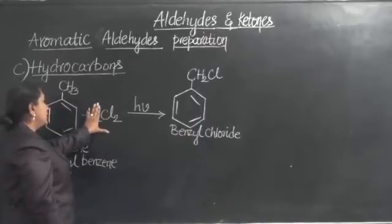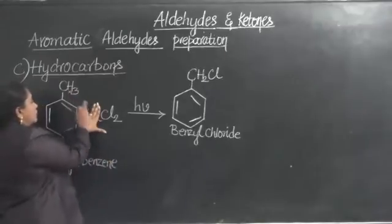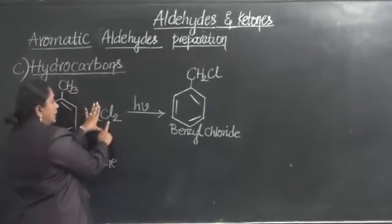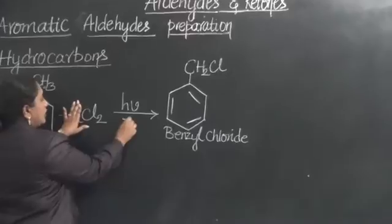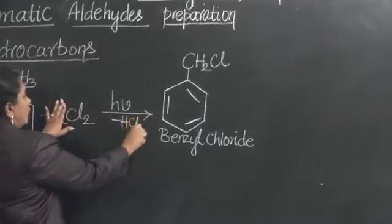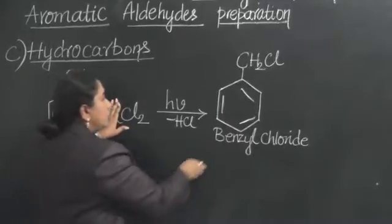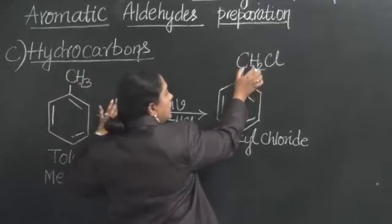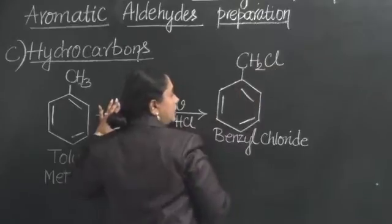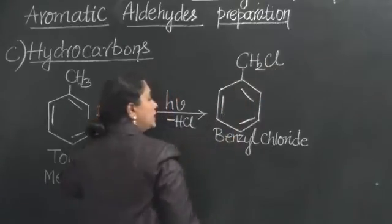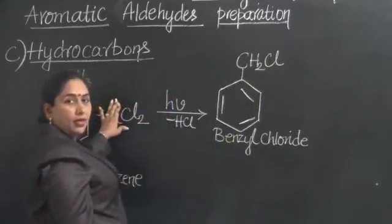One hydrogen is coming out, that is reacting with one chlorine and it is coming out as HCl. One more chlorine is taking the place of the H. Therefore, the name of the compound or this primary compound will be CH2Cl from CH3. The name of this compound is benzyl chloride. In the next step, what happens?